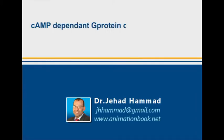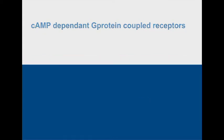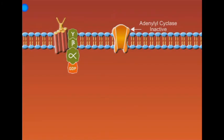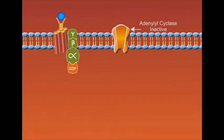Cyclic AMP-Dependent G-Protein Coupled Receptors. Some types of transmembrane receptors are naturally coupled to an internal protein called G-Protein. This G-Protein is composed of three subunits: alpha, beta, and gamma subunits. The alpha subunit in its inactive state is bound to a GDP molecule.